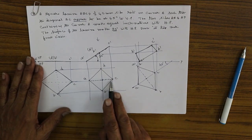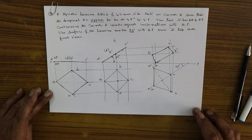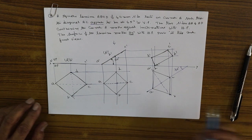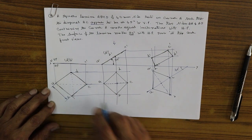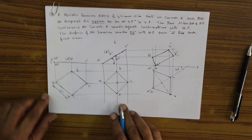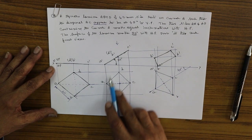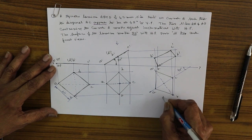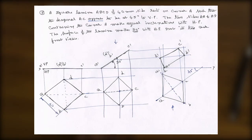That is the final answer. We have taken the AC diagonal directly inclined at 45 degrees to get the final view. To summarize: a square laminar resting on one of its corners, starting with the corner on the left-hand side, dimension 40 mm. Draw the front view, make it inclined to HP at 30 degrees, project to get a rhombus-like figure, transfer AC at 45 degrees, and project the final front view. That is the final answer for the square laminar. Thank you.